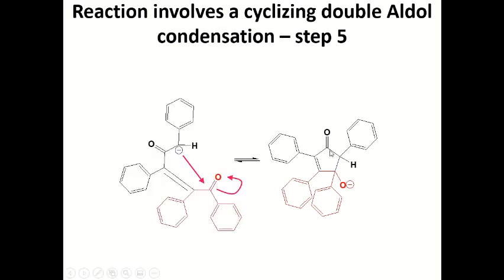And as a consequence, a five-member ring is going to be formed, and an anion is going to be generated in the position of this oxygen.